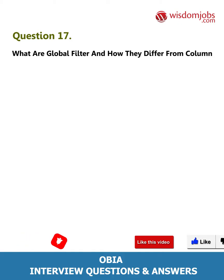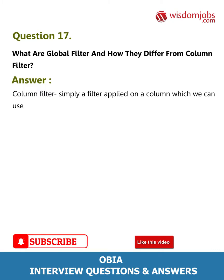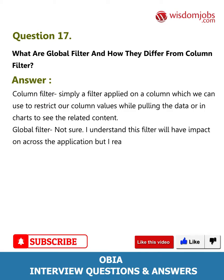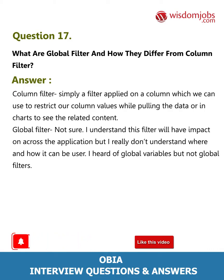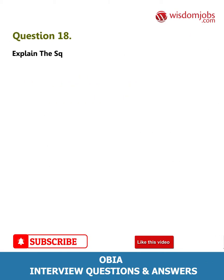Question 17: What are global filters and how do they differ from column filters? Answer: A column filter is simply a filter applied on a column, which we can use to restrict column values while pulling data or in charts to see related content. As for global filters, I understand they have an impact across the application, but I am not fully certain how they are used. I have heard of global variables but not global filters.